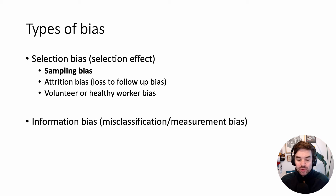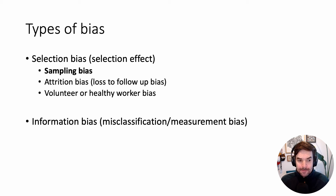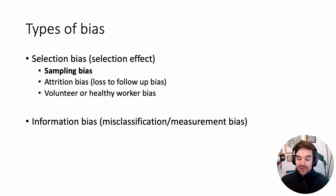Attrition bias occurs when you look at the results of a study and you're identifying results only from people who made it to the end of the study. Maybe all the people who dropped out earlier had systematically different results. Similarly, with healthy worker bias, if you're looking at a study of healthy workers or volunteers, those results might not be representative of individuals who are unhealthy — you have a bias where people appear healthier than they truly are.